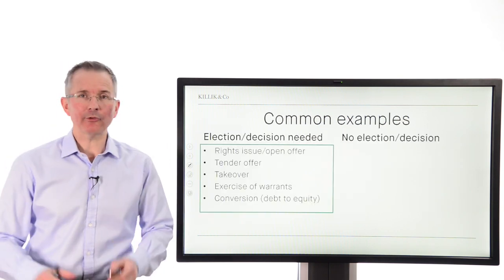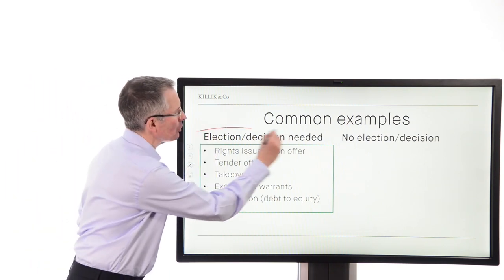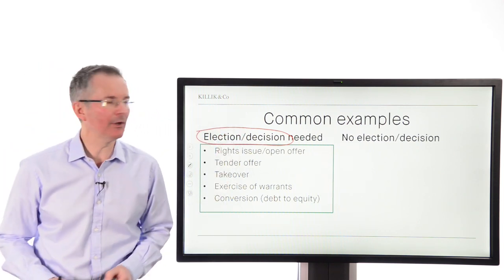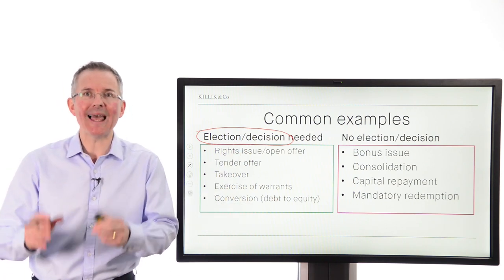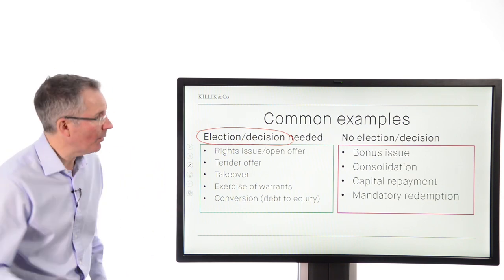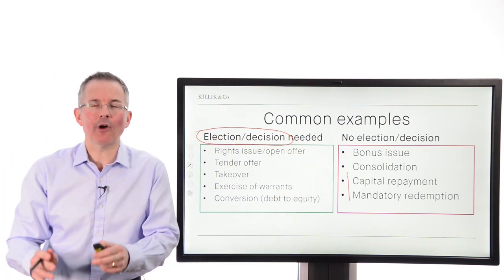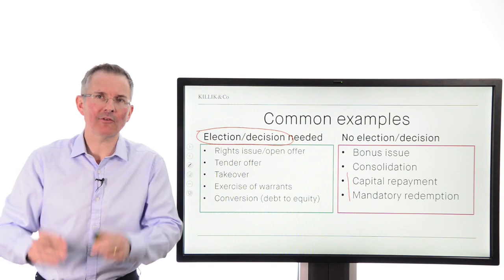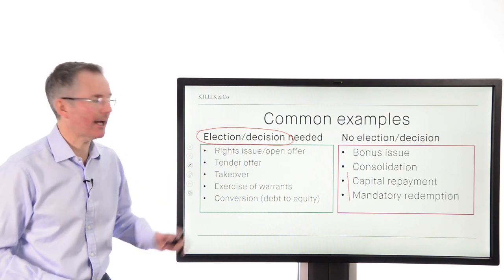Common examples — this is not an exhaustive list, but on the left are very common examples where an election or decision is needed, and we'll run through them one in turn. On the right are typically situations where there is no election or decision required — non-elective events. This can vary; sometimes the bottom items can be elective, and the jargon used in the letter you receive might vary slightly too.